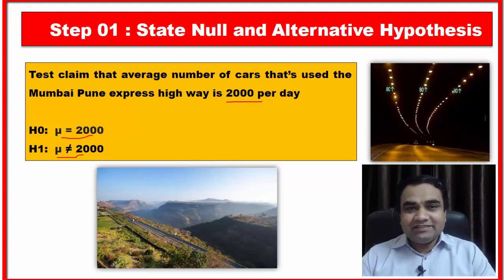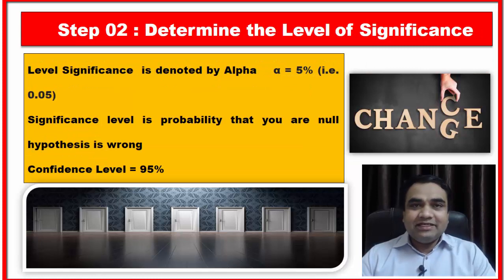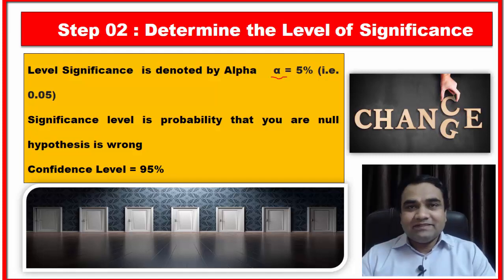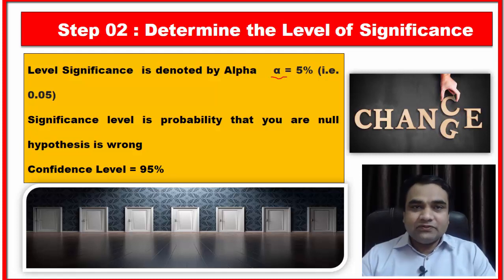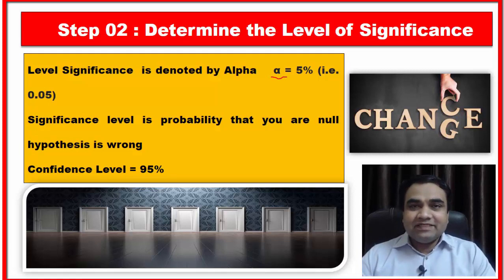After stating the null and alternative hypotheses, the next step is to determine your significance level. We generally denote the significance level by alpha, and we commonly consider it as 1 percent or 5 percent. Five percent means 0.05 and 1 percent means 0.01. I would also like to introduce the term confidence level — but first, let us understand what significance level means.